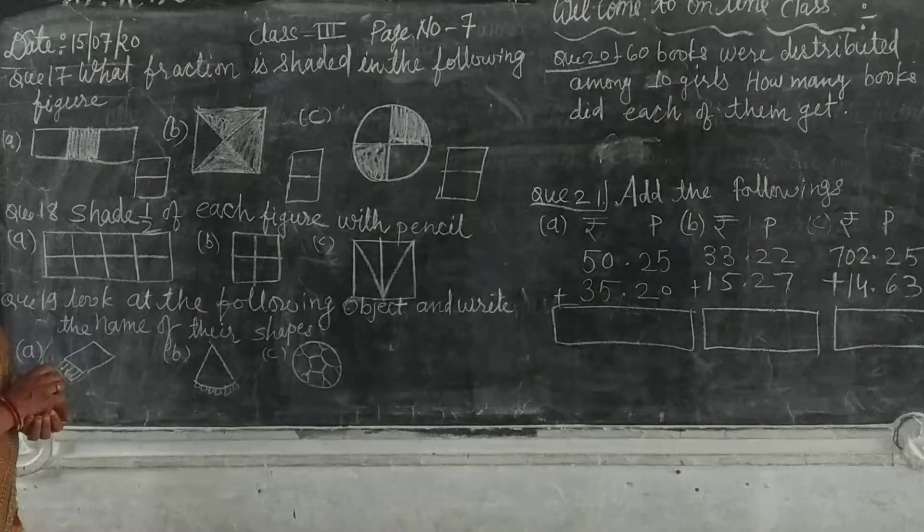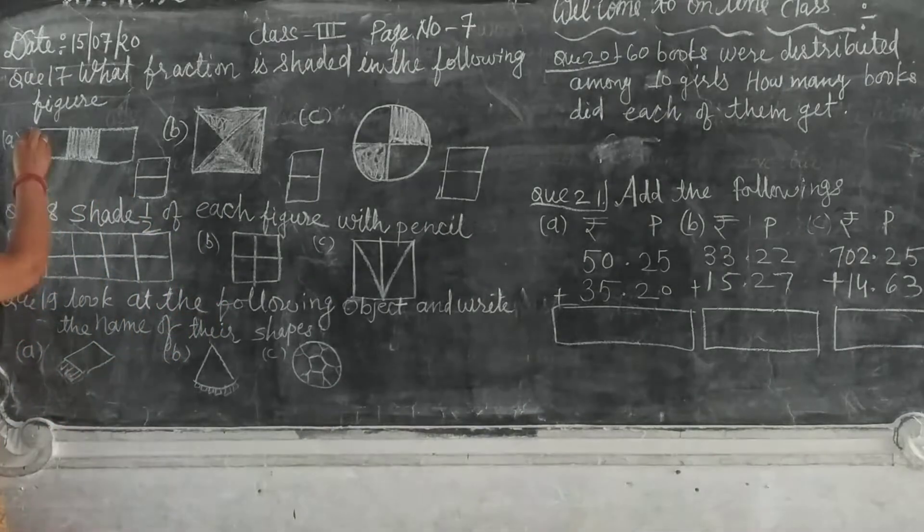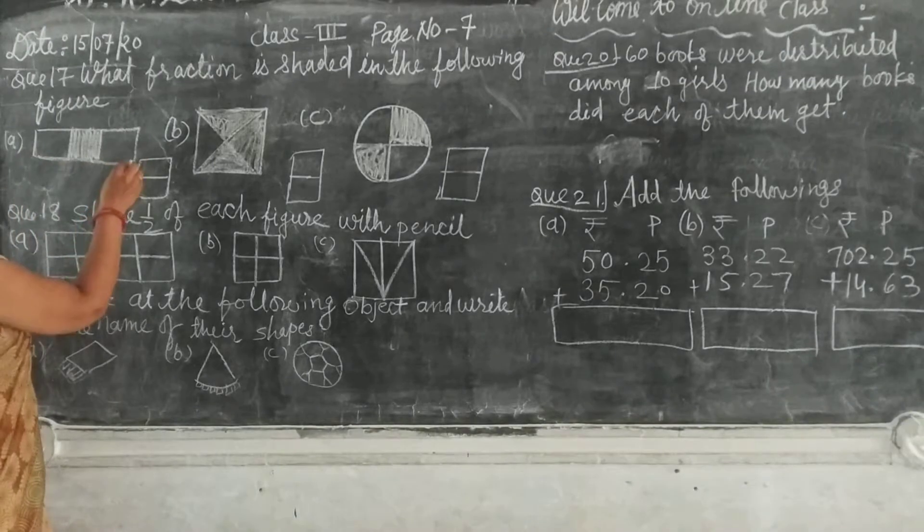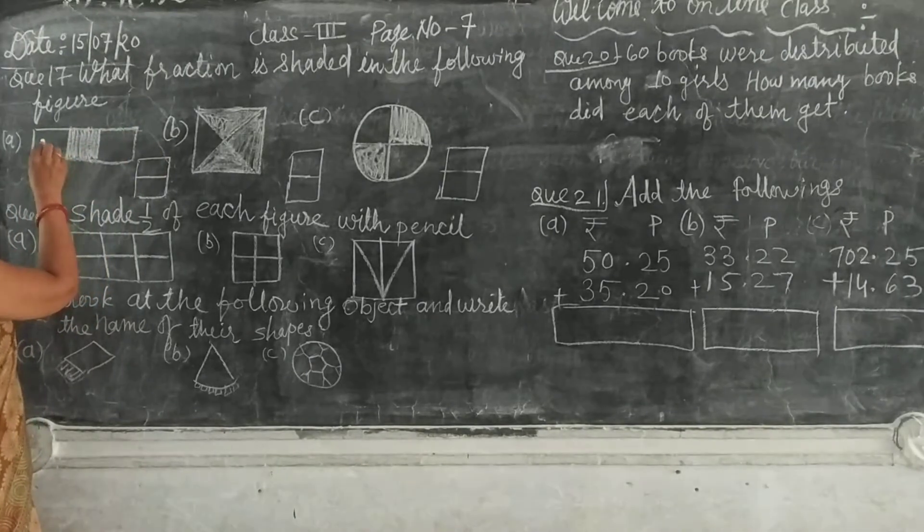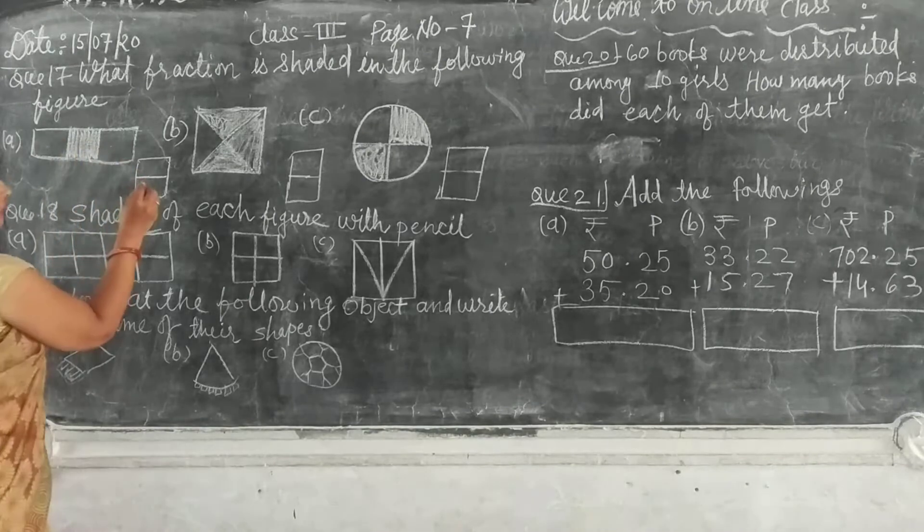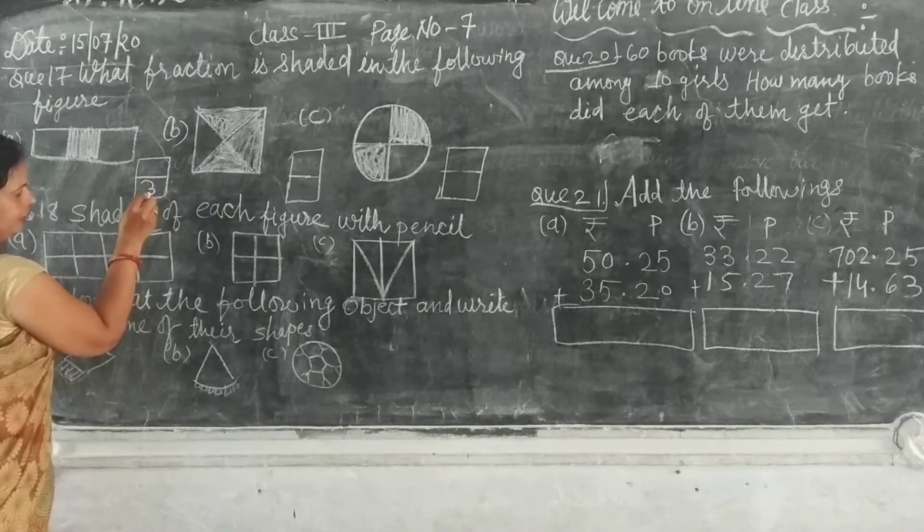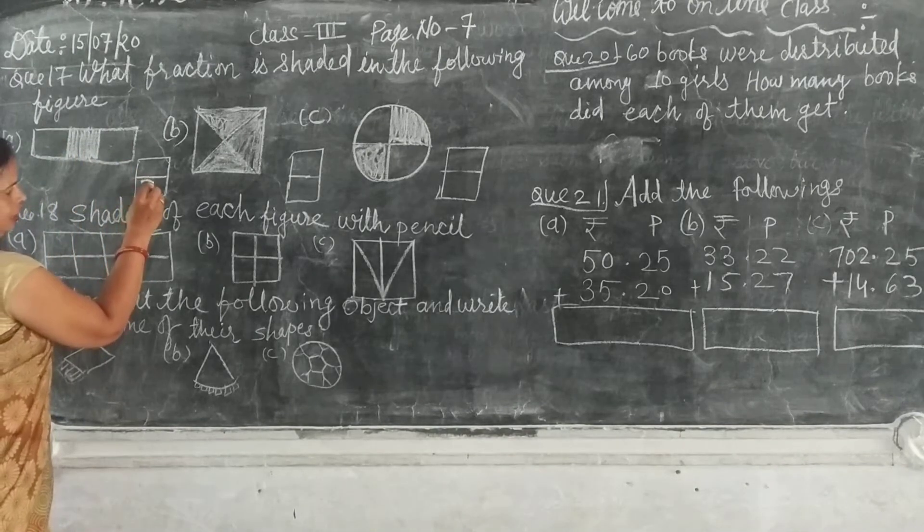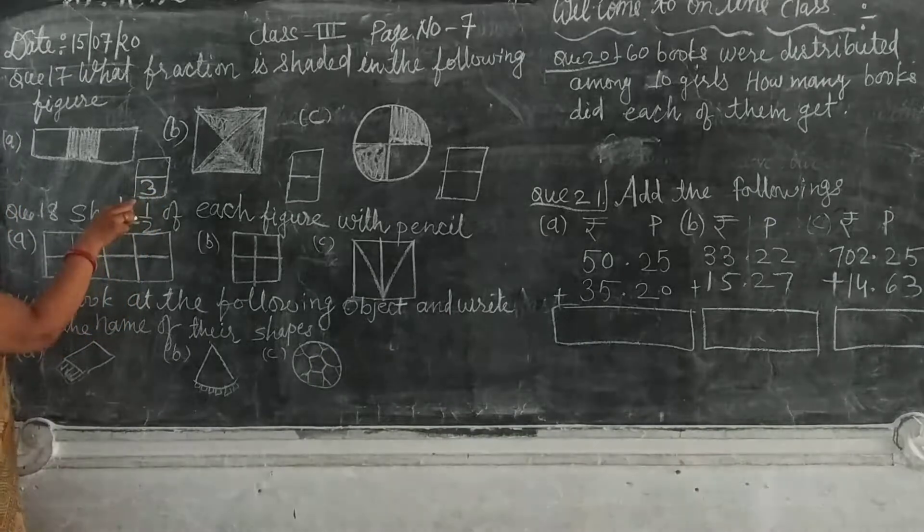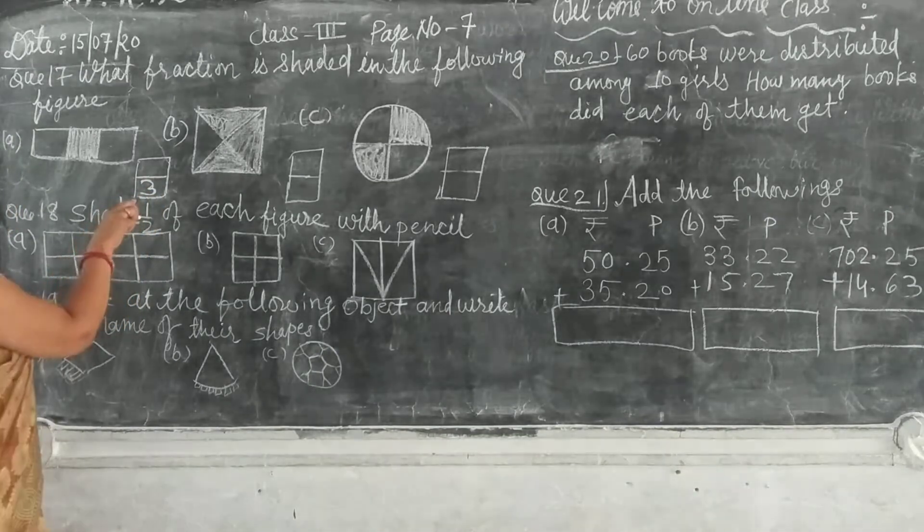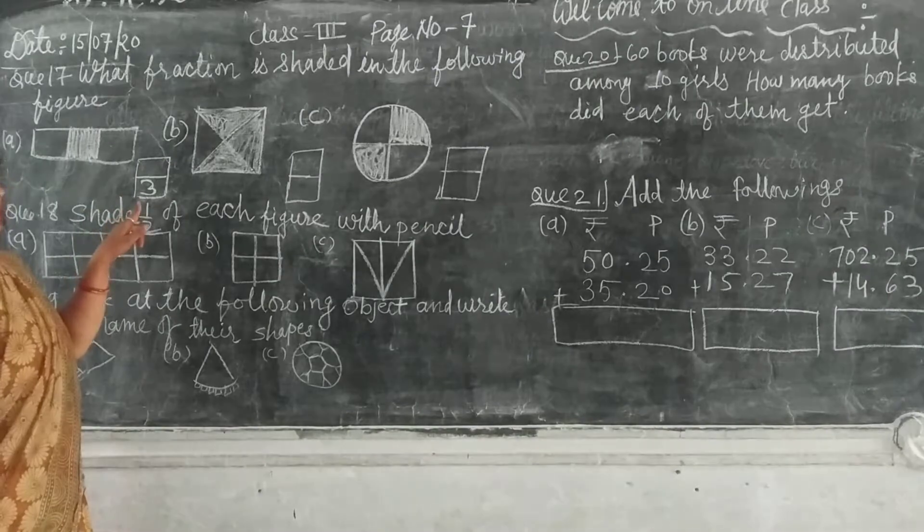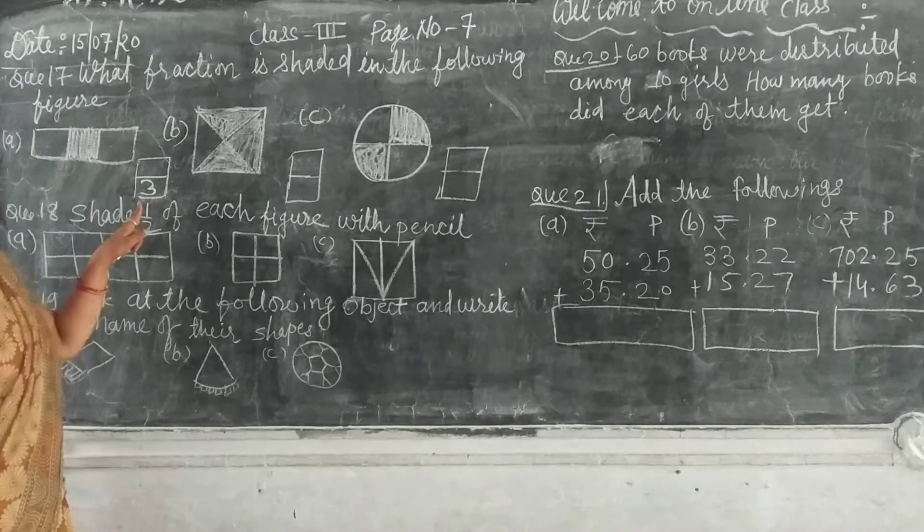Now, first we have shaded total parts 3: 1, 2, and 3. Then we can write 3. Total parts fraction, and total parts are...